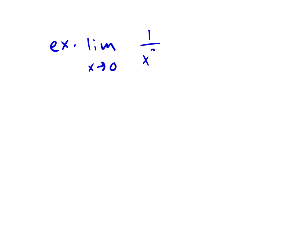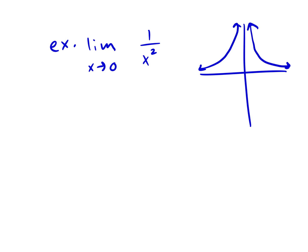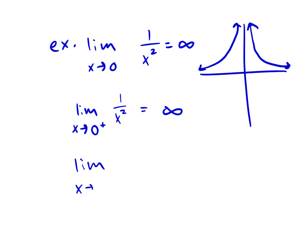Bonus example: consider the limit as x approaches 0 of 1 over x squared. Our graph approaches infinity from both the left side and the right side. The limit of 1/x² as x approaches 0 from the positive direction is infinity, and from the negative direction is also infinity. Because they approach the same value, our limit as x approaches 0 is infinity.